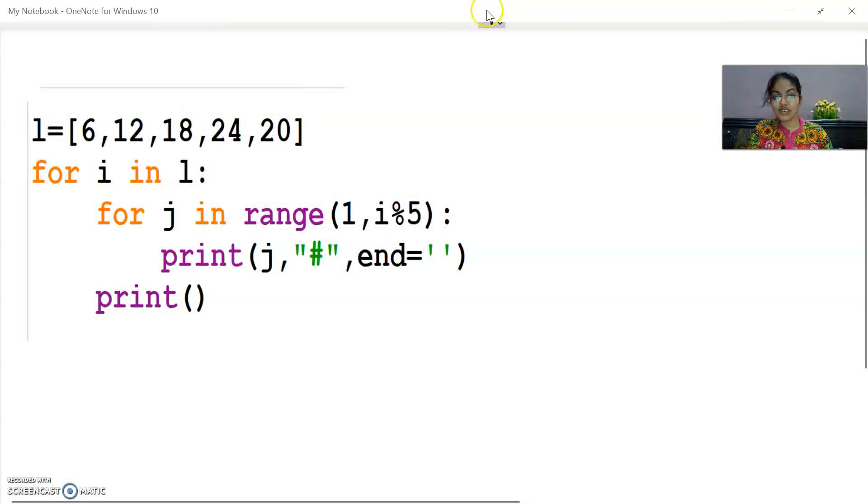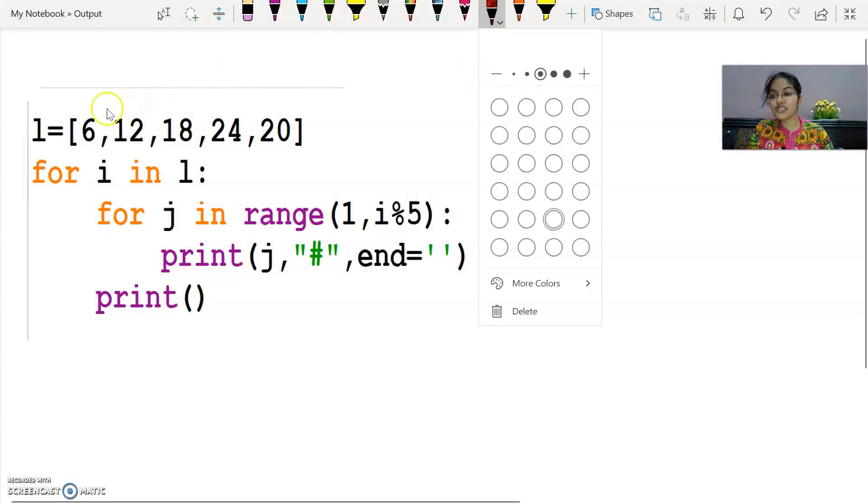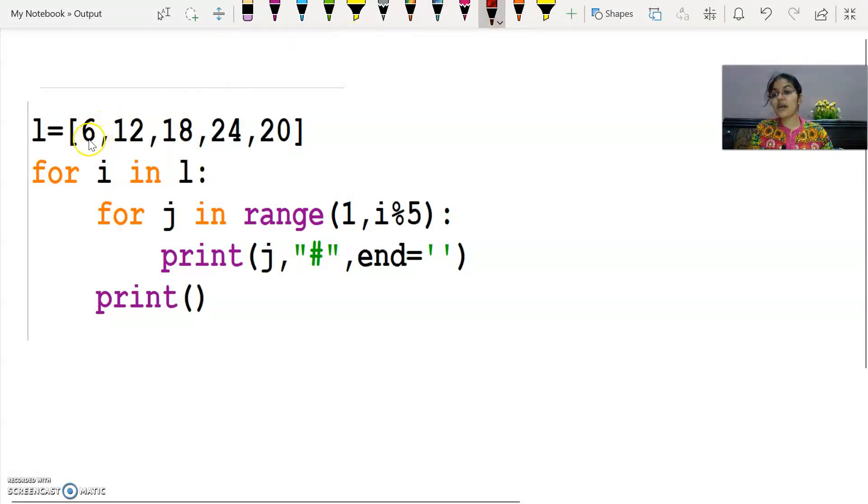This is the code fragment. First we have a list given, and in that list the elements are 6, 12, 18, 24 and 20. For i in l, that means one by one I will take the values of all these. Whatever values are in my list, the i variable will take all these values but one by one. That means in i first will come 6, then 12, then 18, then 24 and then 20.